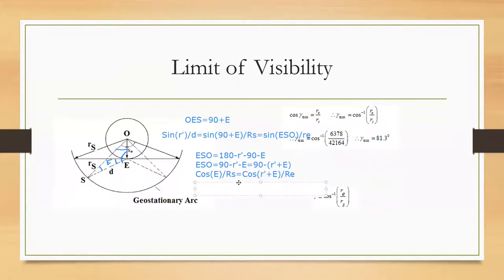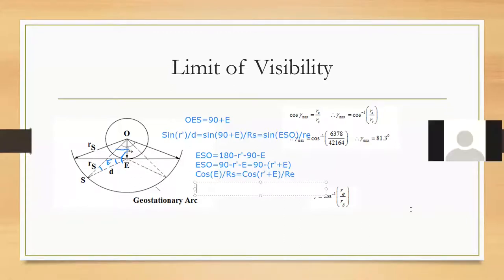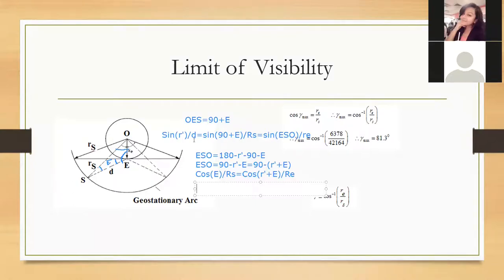Now I want the value of gamma dash. From the relation cos of (gamma dash + E) over RE equals cos E over RS, we can rearrange: cos of (gamma dash + E) = cos E times RE divided by RS.